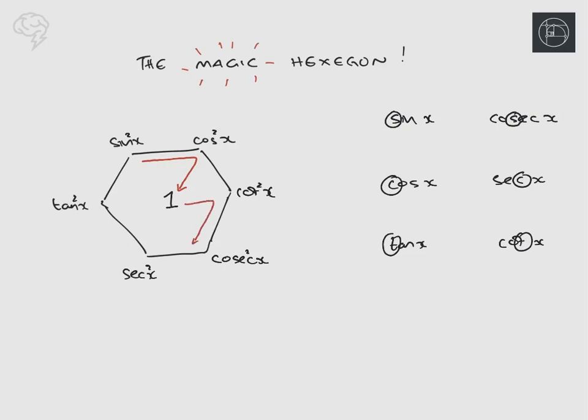And what this is going to be really useful for is for us to memorize and see which trig identity is going to be useful. So times when you will use this, for example, you're going to use it when you are converting parametric to Cartesian functions. You could use it any time you're doing a trig proof or a trig equation and you need the identity.